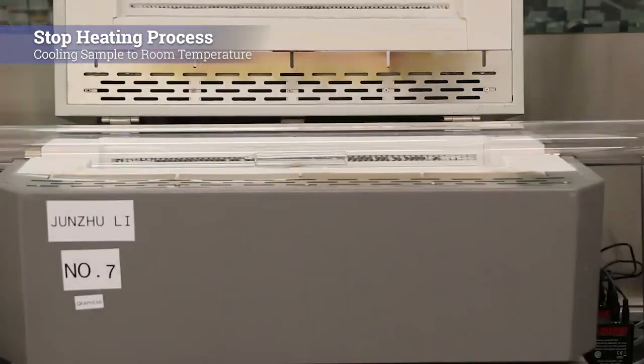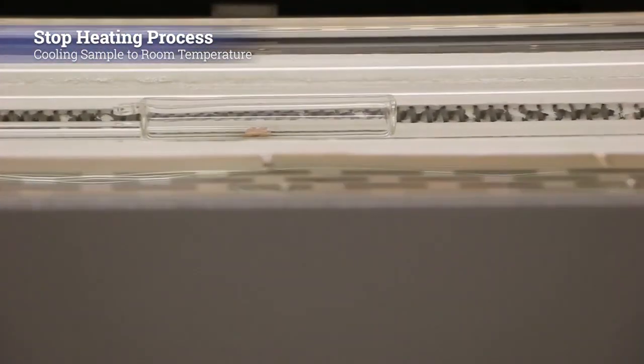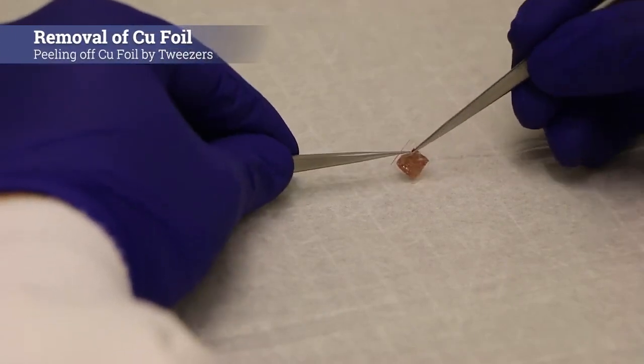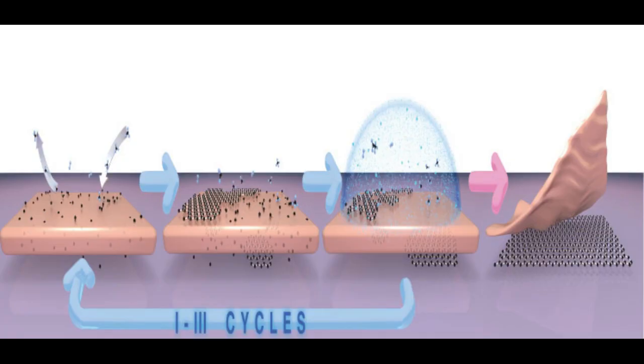The research team is now trying to grow other two-dimensional materials on the insulator-supported graphene to build functionalized large-scale heterostructures. These heterostructures, held together by Van der Waals interactions, are expected to be useful in future nanodevices.